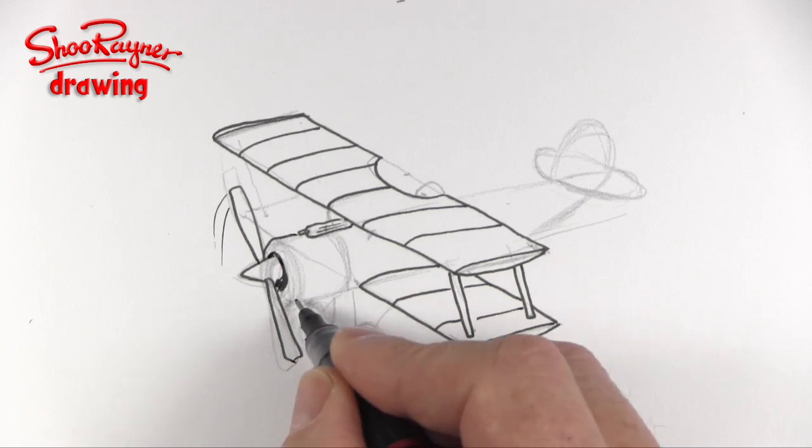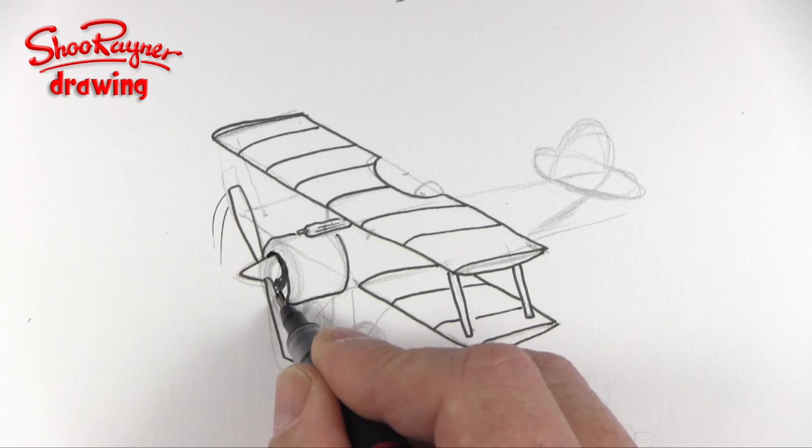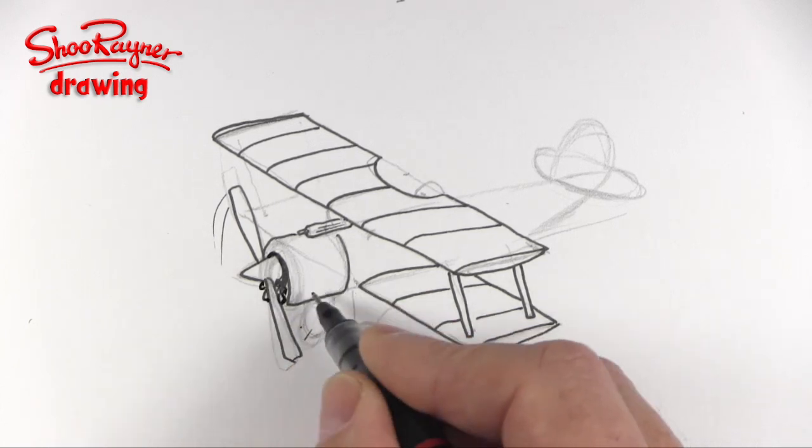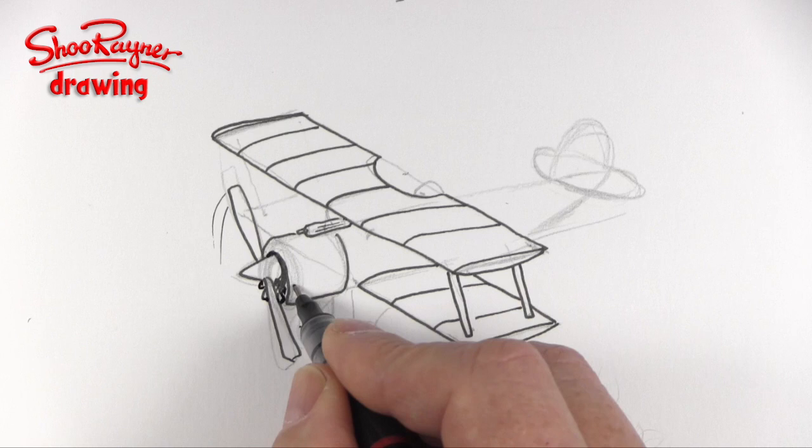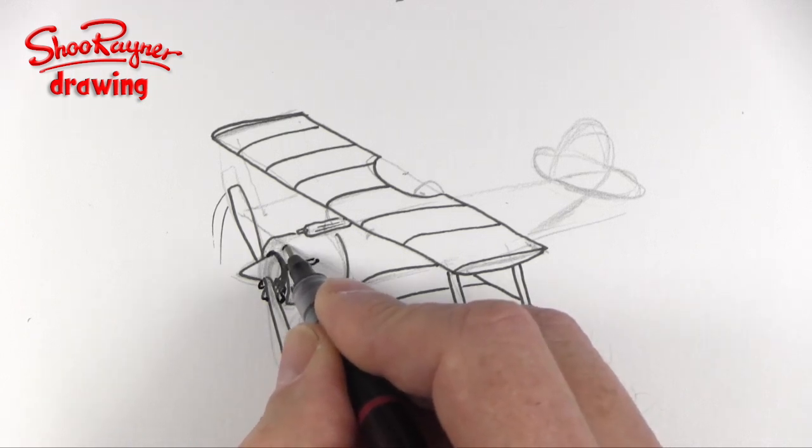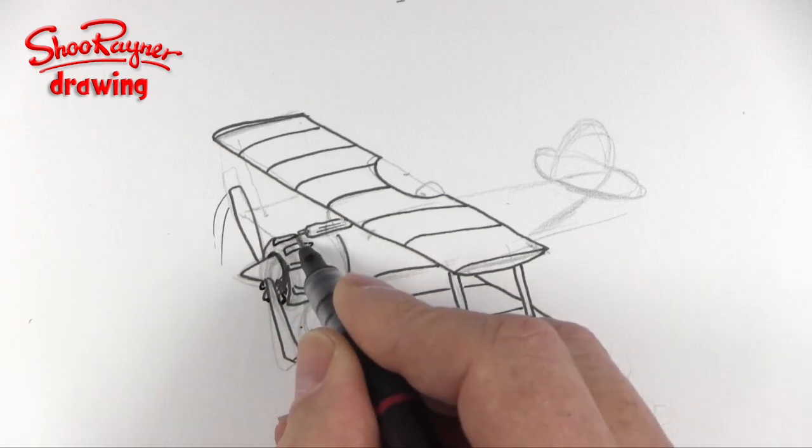I suppose I should have it sort of going zipping round and round and round and have it flying in the air so we could just do something like that if you want. I'm going to have this nose cone cowl coming down there and you maybe see bits of engine and things in there.